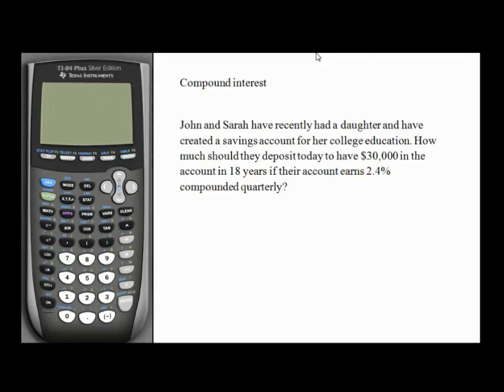In this video we'll be talking about compound interest. Let's look at an example. John and Sarah have recently had a daughter and have created a savings account for her college education. How much should they deposit today to have $30,000 in the account in 18 years if their account earns 2.4% compounded quarterly?